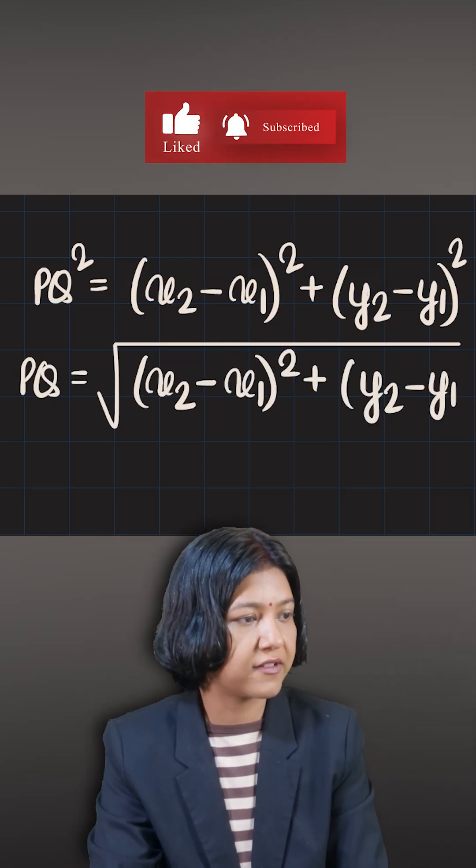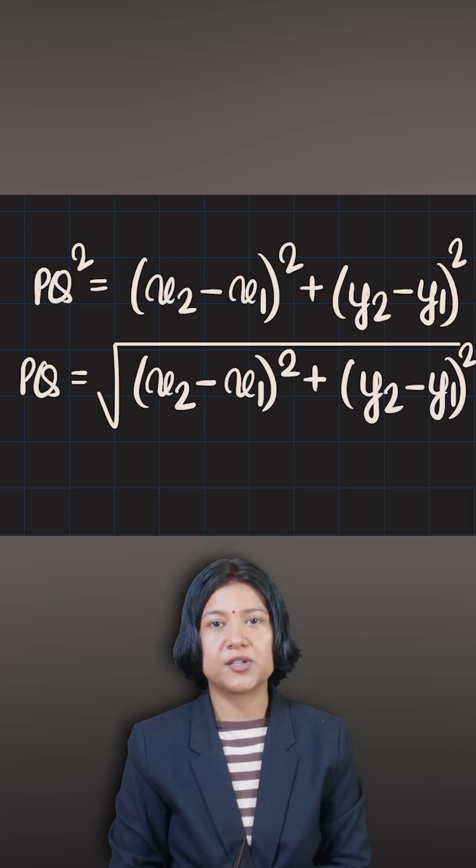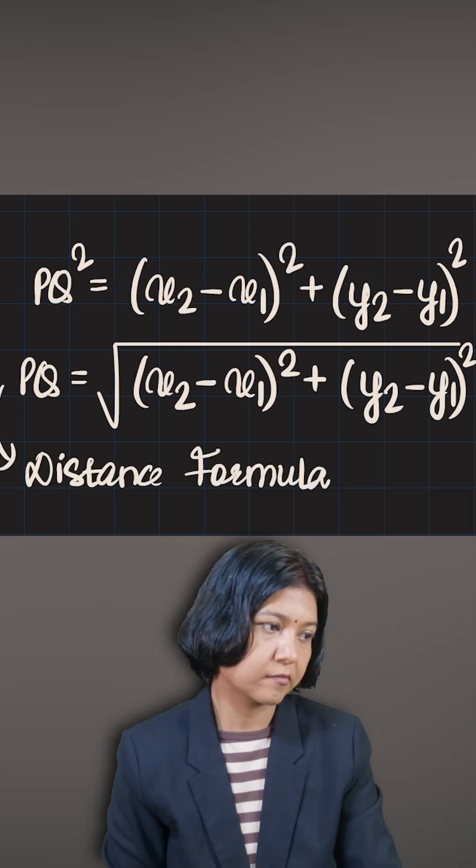Remember, these values given to you are your coordinates. When you have two pairs of coordinates, then you can always find the distance between the two just by doing this. So this formula is called the distance formula.